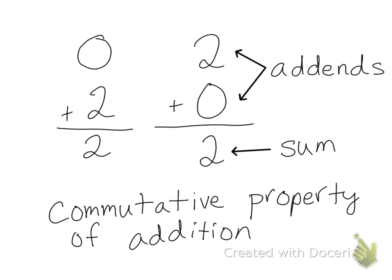So when we're adding numbers, the numbers we add are called addends. The two numbers we're adding are called addends, and the answer that we get is called the sum. In this problem, two and zero are the addends, and the sum is two.